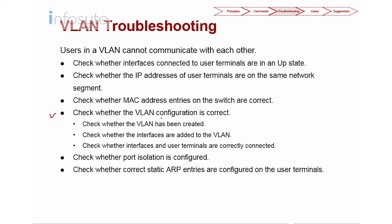Another check is to verify whether the VLAN configuration is correct. There are a few things to check here: whether the VLAN has been created — do a display VLAN; check whether the interface has been added to the VLAN, assuming you are using interface-based VLAN; and check whether the interface and user terminal are correctly connected — again, do a display VLAN.